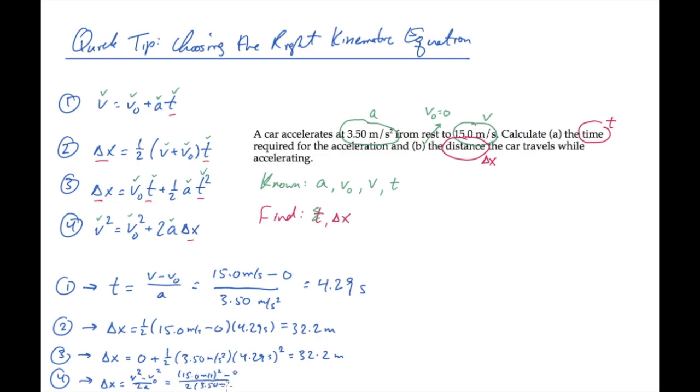So the process for choosing the right kinematic equation is this. Given the problem statement, extract from it the known quantities. Quantities that appear in the kinematic equations that you can attach numbers to.